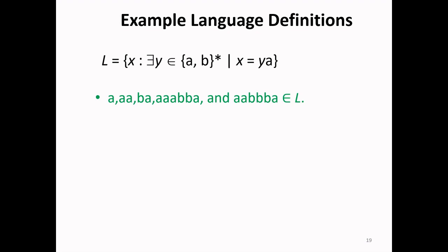Then AAABBB is your Y string concatenated with A, so AAABBBA is X which belongs to language L. Similarly, AABBBB is your Y concatenated with A, giving AABBBBA, which is your X belonging to L.